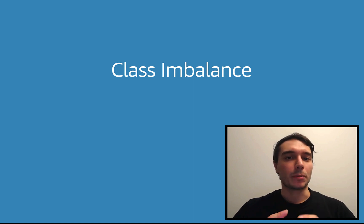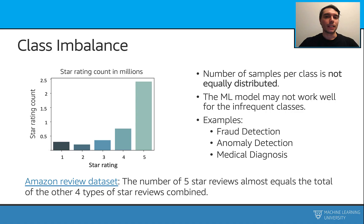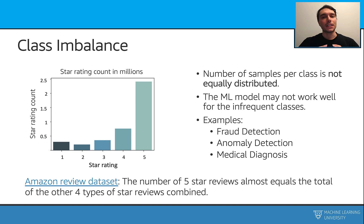Class imbalance is a common problem in machine learning. When the number of samples per class is not equally distributed, or when we have some heavily underrepresented classes, this can happen. In this case, machine learning models may not work well with its underrepresented samples. This is primarily because there is not enough data to learn from.